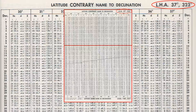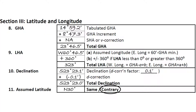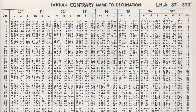These pages are divided into two sections: contrary and same. To determine which side of the page you use, remember, in section 3 for assumed latitude, you chose same or contrary. In our example, our LHA from section 3 was 323 degrees. Our assumed latitude was 30 degrees north, and we circled contrary. Ignoring for now the minutes, our declination was 23 degrees south. So in Publication 229, we turned to the page for an LHA of 323 degrees.